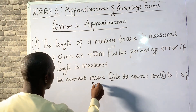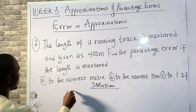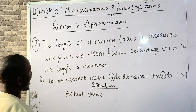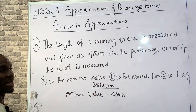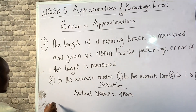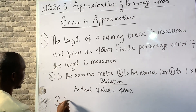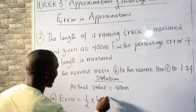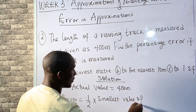From the question we have been given the actual value. The actual value is 400 meters. Now the error depends on the approximation. Remember, the error is equal to one-half times the smallest value of approximation.